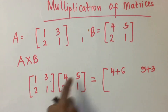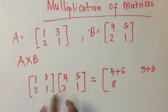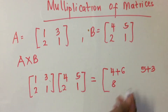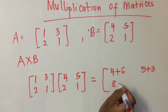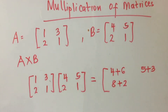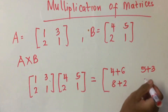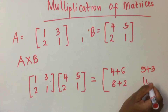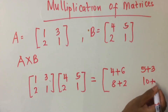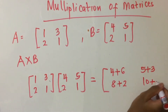Now we will see the next one. 2 times 4, and 8; 1 times 2, and 2. Then 2 times 5, and 10; plus 1 times 1, and 1.